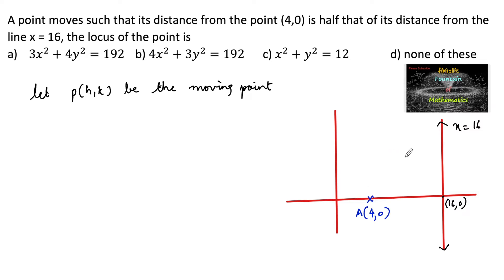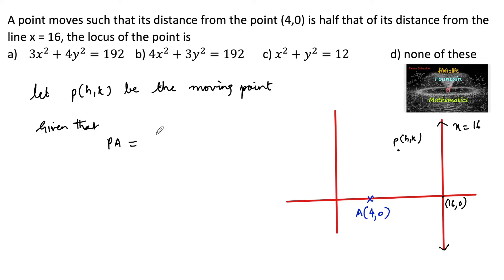Let us consider the moving point here. It is given that the distance from the moving point P to point A is half that of its distance from the line x = 16. So the distance from P to A equals (1/2) times the perpendicular distance PM, i.e., (1/2) × PM.